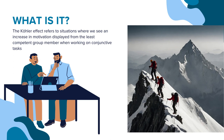A conjunctive task refers to a situation where the performance of the weaker group member determines how successful the team is. For example, two mountaineers who are tethered together are involved in a conjunctive task, as reaching the summit is dependent on the weaker group member's ability.